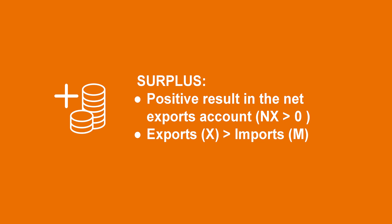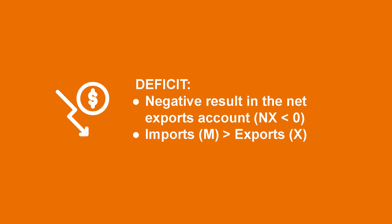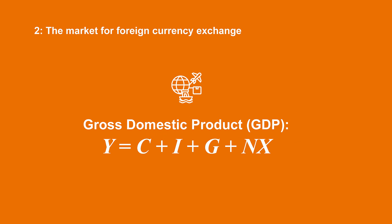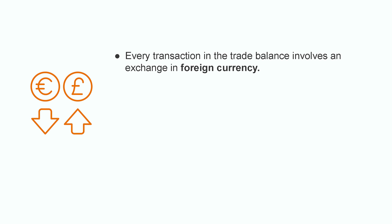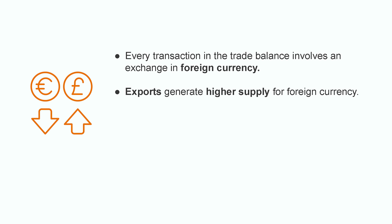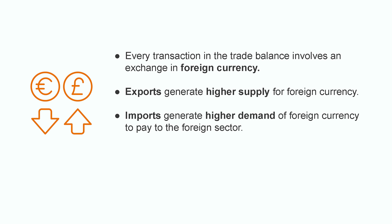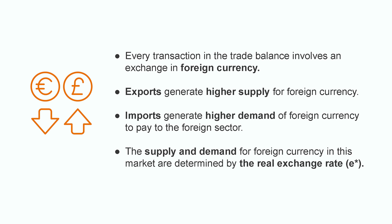Trade balance can experience surplus or deficit. A surplus stands for a positive result in the net exports account, which would mean that exports are higher than imports. If imports were higher than exports, this account would be negative — in other words, we would be talking about a trade balance deficit. Total income in an open economy will then be calculated by adding up consumption, investment, public spending and the trade balance: C plus I plus G plus NX. As we previously said, every transaction in the trade balance involves an exchange in foreign currency. Exports generate higher supply for foreign currency and imports generate higher demand for foreign currency to pay to the foreign sector.